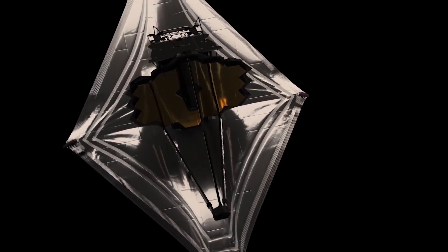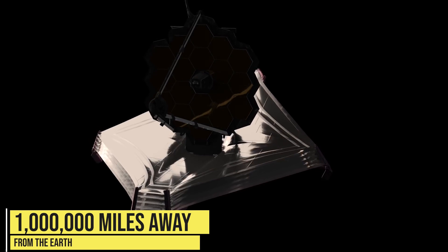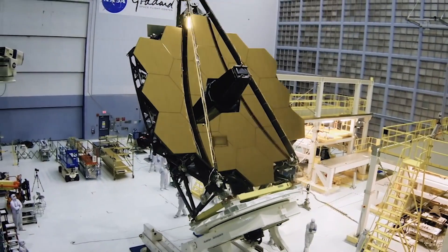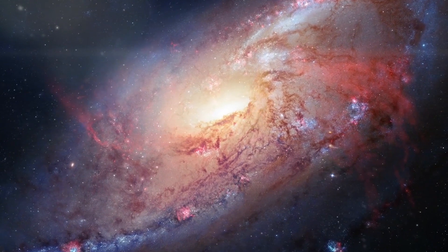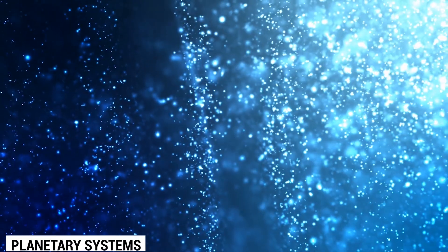For those who don't know, the James Webb Space Telescope is an infrared observatory that's orbiting the Sun about 1 million miles away from Earth. The primary goal of this telescope is to find galaxies that formed in the early universe and to observe the stars forming planetary systems.